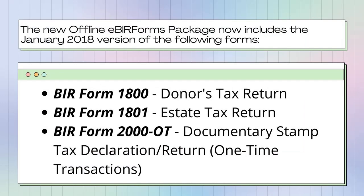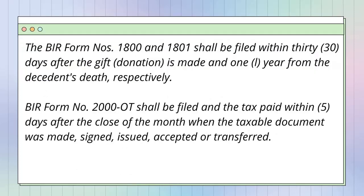So what's new in this offline eBIR Forms package version 7.8? This package now includes the January 2018 version of the following forms: BIR Form 1800, which is the Donor's Tax Return; BIR Form 1801, which is the Estate Tax Return; and BIR Form 2000-OT, which is the Documentary Stamp Tax Declaration or Return for one-time transactions.